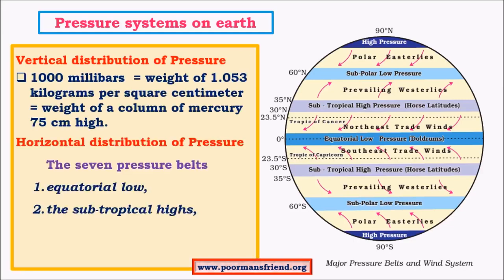There are total seven pressure belts: one equatorial low, two subtropical highs, two subpolar lows, and two polar highs. The polar highs are at both poles, the two subpolar low pressure belts are one in the northern hemisphere and one in the southern hemisphere. Likewise we have two subtropical high pressure belts, and at the equator we have the equatorial low pressure belt.